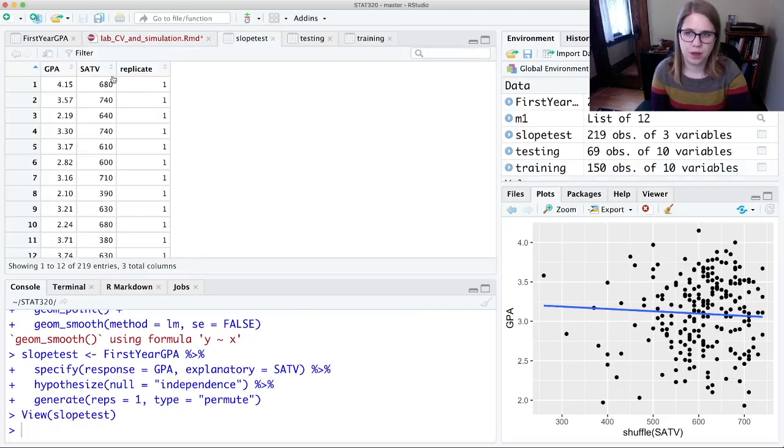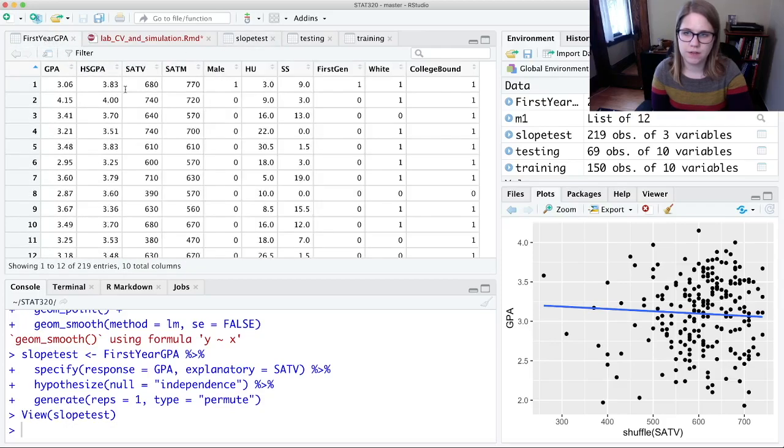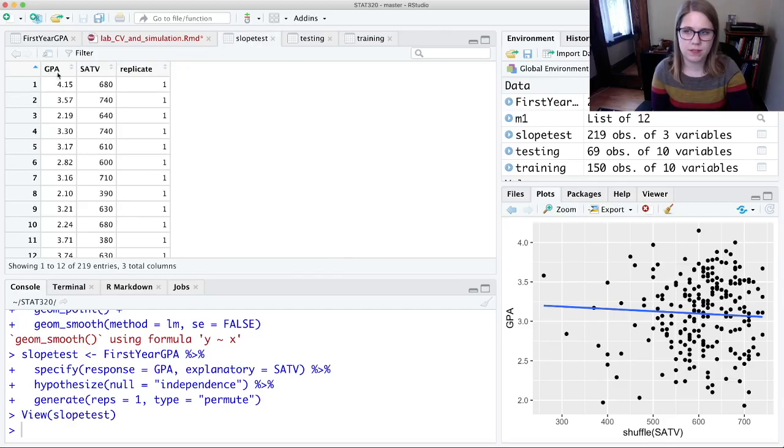I'm going to have my GPA and my SATV, and this is going to be, looks like it left the SAT verbal the same, actually. So it's got 680, 740, 640. But then it's got mixed up values of the GPA. And it says replicate one, because this is just one randomization statistic.